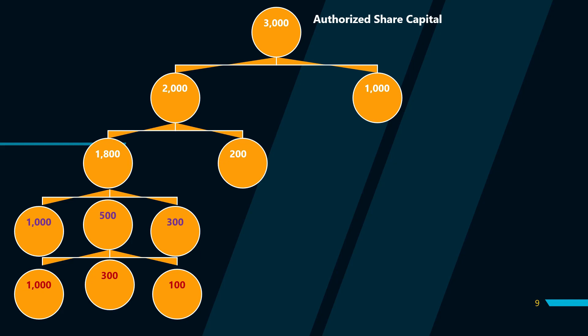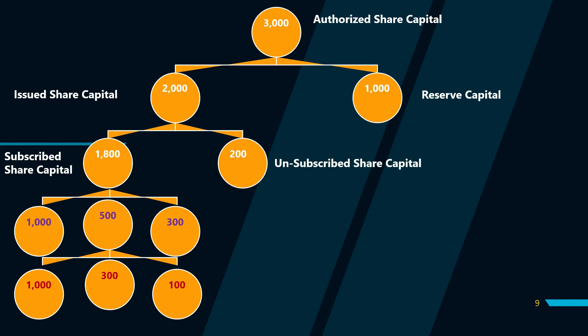Usme se company jitna market mein bechne nikalti hai usko bolte hain issued share capital — mere example mein 2000 mangoes bechne nikale the. Jo market mein bechne ke liye nahi nikalte aur emergency ke liye wait karte hain, usko bolte hain reserve capital — capital ka wo hissa jo aap public ko offer nahi karte, for winding up aur dissolution of the company tab hi ise becha jata hai. Us issued share capital mein se jitne shares actually bikein unko bolte hain subscribed share capital, aur jo nahi bikte unko bolte hain unsubscribed share capital.